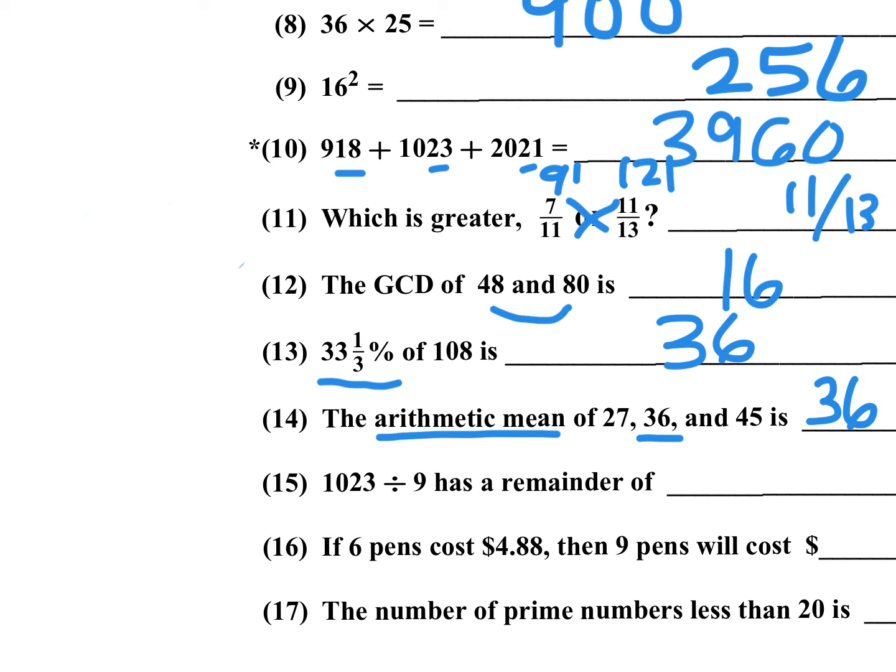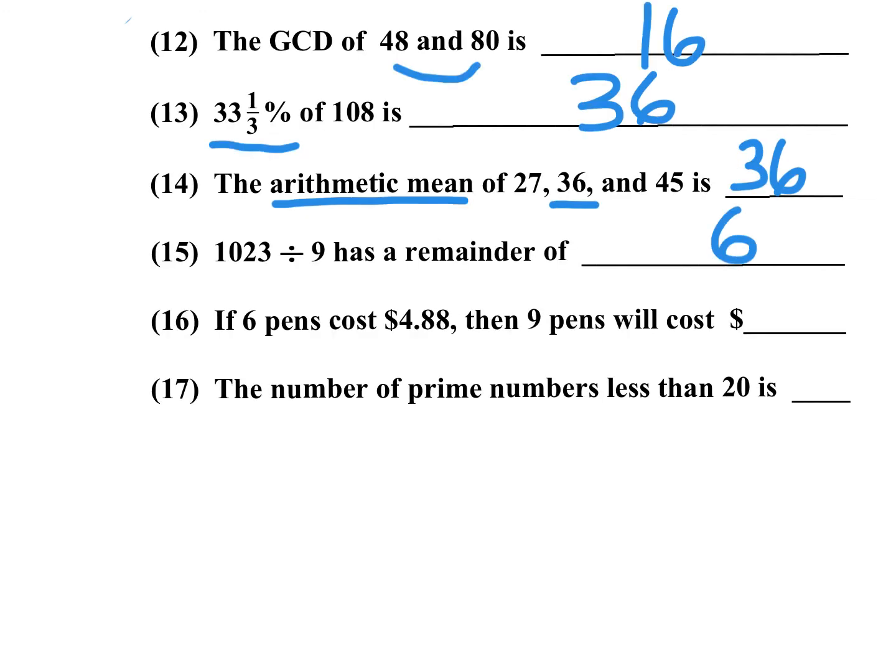1,023 divided by 9 has a remainder of blank. When you're dividing by 9 or by 3, add up the digits. 1 plus 0 plus 2 plus 3, that's 6. 6 divided by 9, that would be a remainder of 6. We're only looking for the remainder here. So for number 15, the answer is 6. 1 plus 0 plus 2 plus 3 is 6. So the remainder was 6. If this went over 6, let's say this had been an 11, then you would just subtract 9, and your remainder would have been 2.